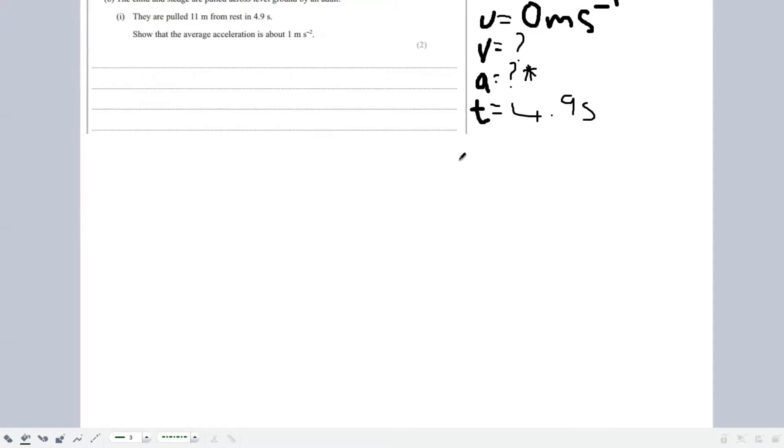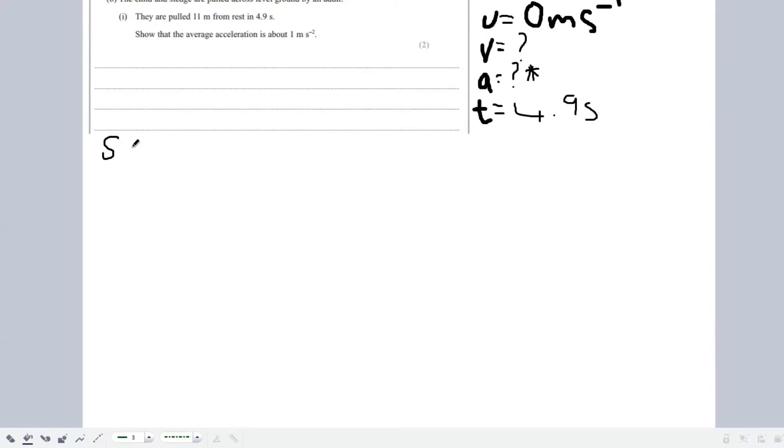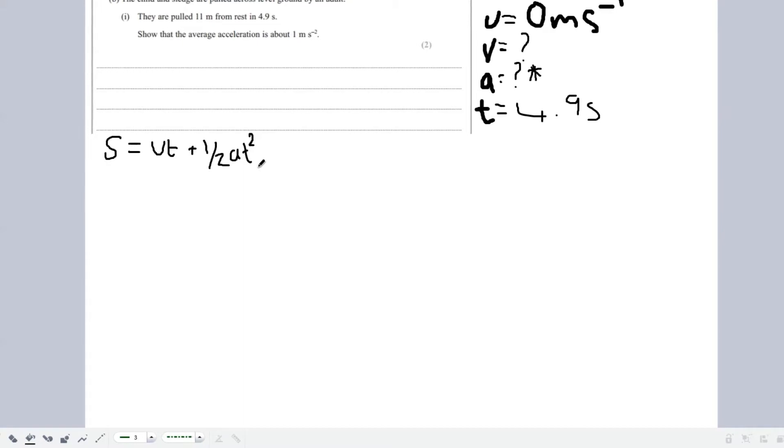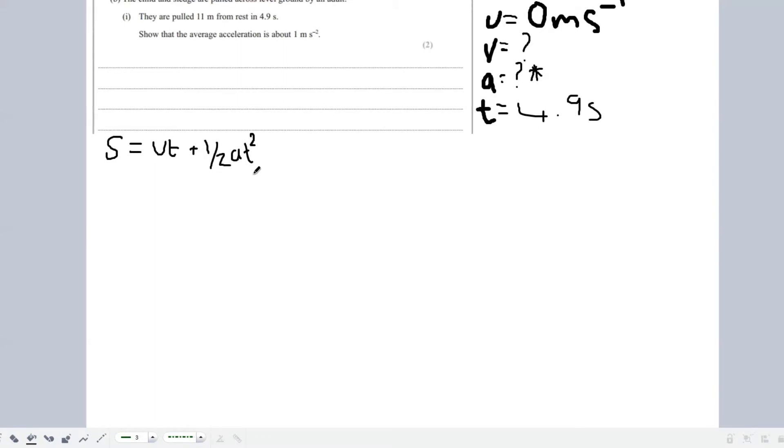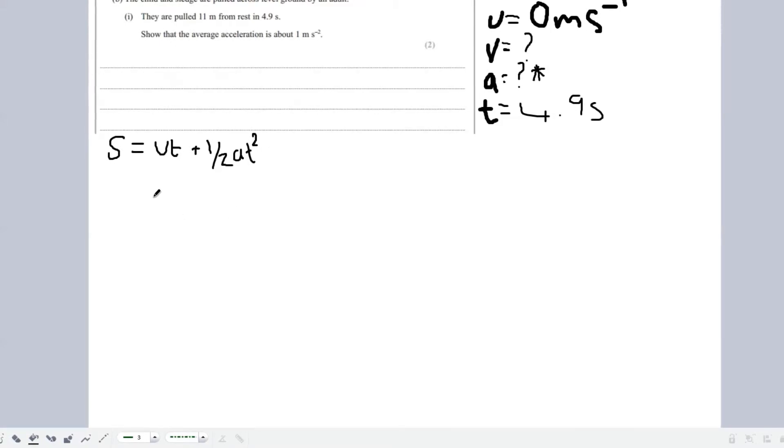If we consult the front of our equation sheet, we should be able to see there's only really one equation with all the variables that we have, and that is S equals UT plus 1/2 AT squared. You can rearrange this while subbing in numbers. I feel like it's better to sub in numbers first, and then rearrange, especially when there's a half in here, we can get rid of a half quite easily.